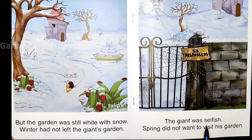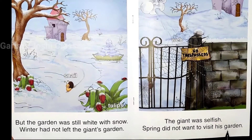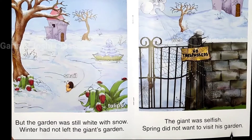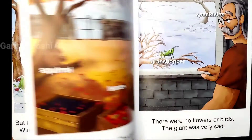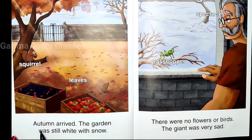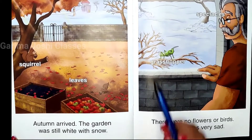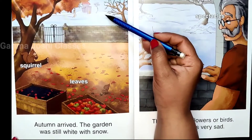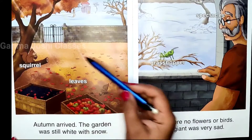The giant was selfish — he was thinking for himself only. Spring did not want to visit his garden and said, 'I will not come in his garden,' because the giant was very selfish. Autumn arrived as well, but the garden was still white with snow with no flowers or birds.